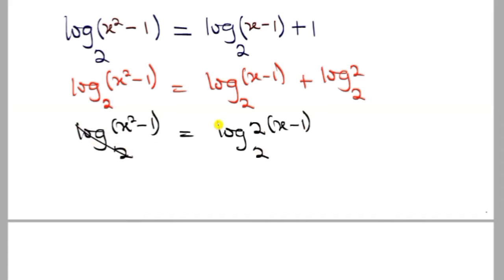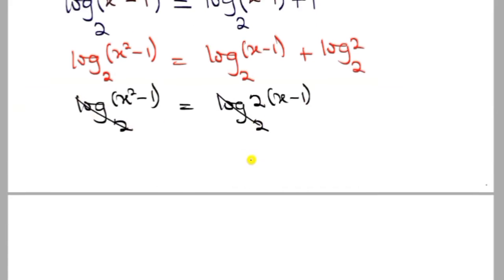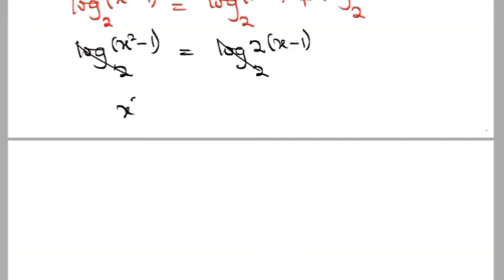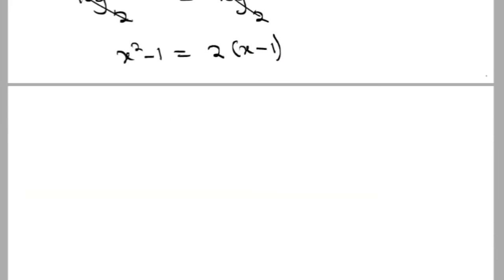So of course, the logarithm of the same base will cancel out, and so I just have x squared minus 1 is equal to 2 into x minus 1. But you can see that the left-hand side is simply a difference of two squares.